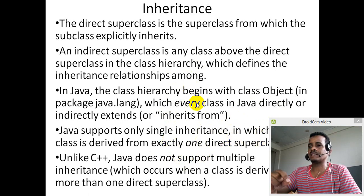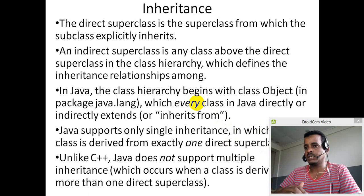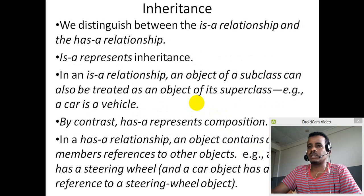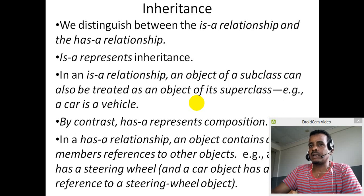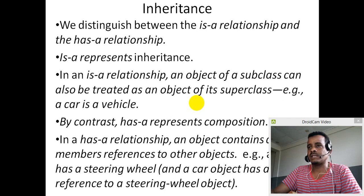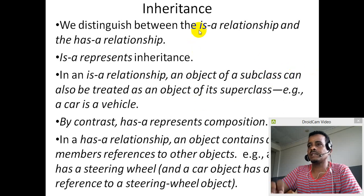The superclass and subclass have an 'is-a' relationship. An 'is-a' relationship means inheritance. A 'has-a' relationship is composition. For example, a student has an address. An undergraduate student is a student. A graduate student is a student. A postgraduate student is a student.